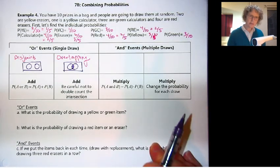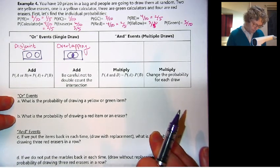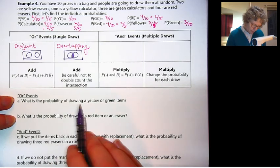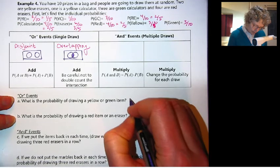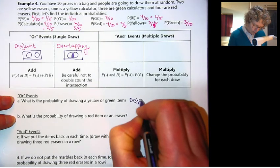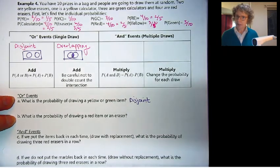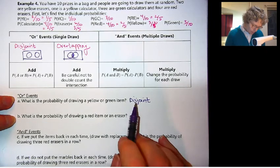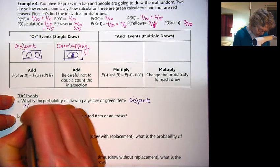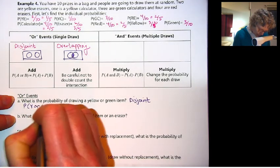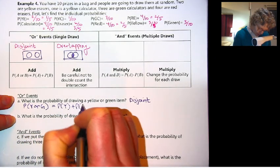So when you do OR events, you always add the probabilities. But we have to be careful, if they're overlapping, not to add that middle part twice. Not to count the intersection twice. Let's go to the OR, which is examples A and B.